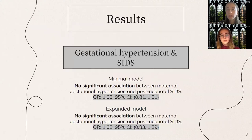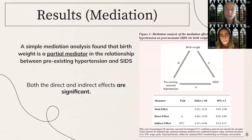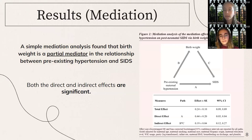Our analyses regarding gestational hypertension showed no significant results in both the minimal and expanded models. Our mediation analysis, conducted for the relationship between pre-existing hypertension and SIDS, showed that birth weight is a partial mediator in the relationship between these two variables, and both the direct and indirect effects are significant.